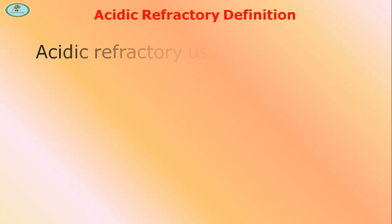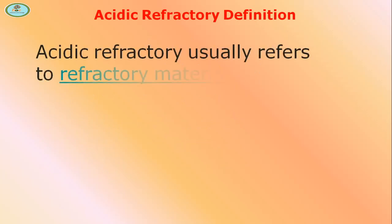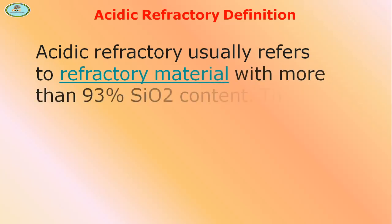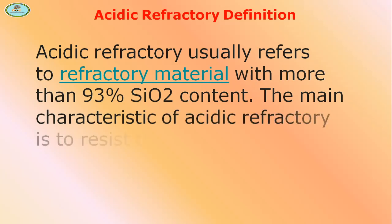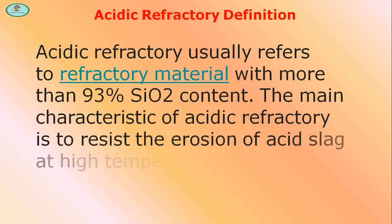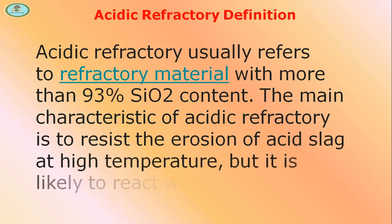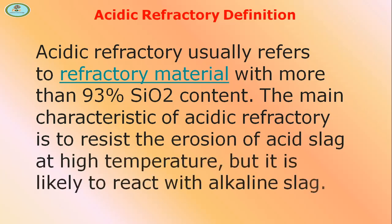Acidic refractory usually refers to refractory material with more than 93% SiO2 content. The main characteristic of acidic refractory is to resist the erosion of acid slag at high temperature, but it is likely to react with alkaline slag.